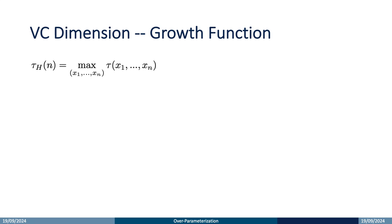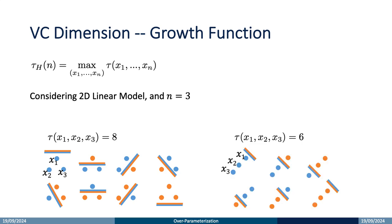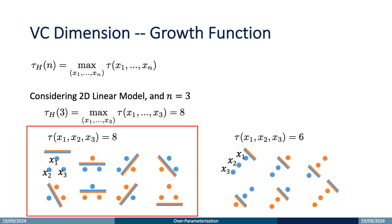The growth function tau(h) is the maximum number of possible hypothesis groups given any n data points, where h represents the hypothesis space and xi refers to the i-th training instance. For example, consider a 2D linear classifier with three samples. In the figure on the left, there are eight possible ways the hypothesis can classify the three points: all points blue; x1 is orange and the others blue; x1 and x2 are orange and x3 blue; or all points orange, and so on. In the figure on the right, if all three points are aligned on a straight line, the hypothesis set can only classify them into six possible groups. Thus, the growth function tau(h) when n equals 3 is 8.